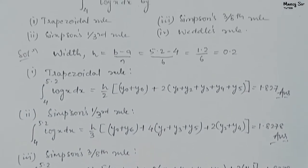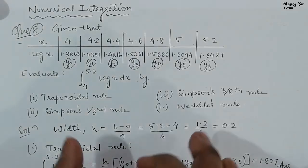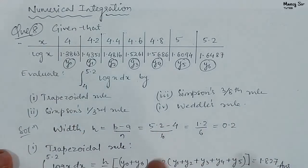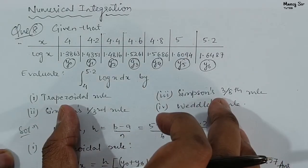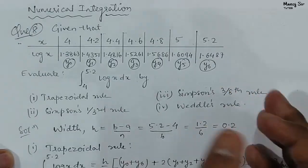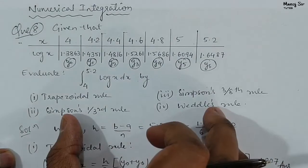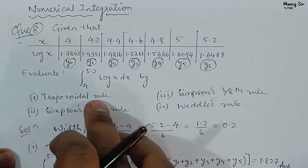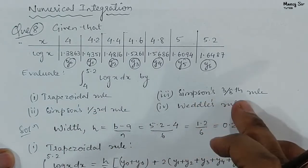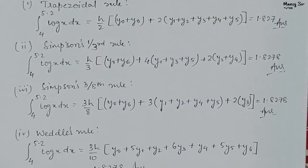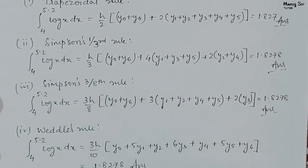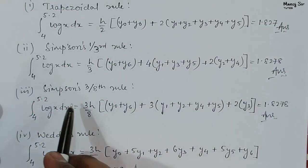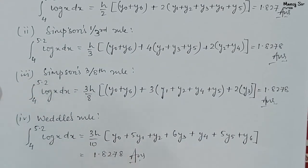In this particular problem, various rules were given by which we can find the value of this integration. But in some problems no rule is given; in that case we have to identify which rule to apply. The most important part of this topic — numerical integration — is that you need to memorize all the formulas: trapezoidal rule, Simpson's one-third rule, Simpson's 3/8 rule, and Weddle's rule. Thank you so much.